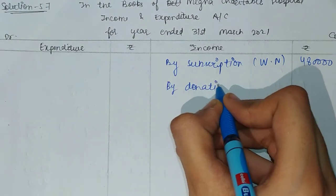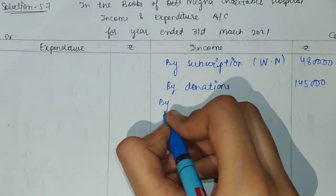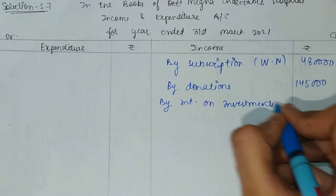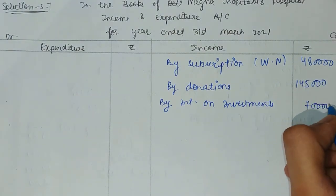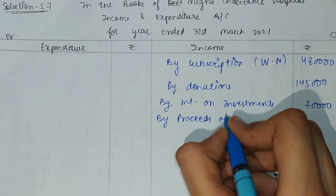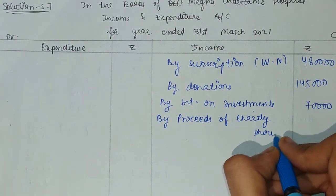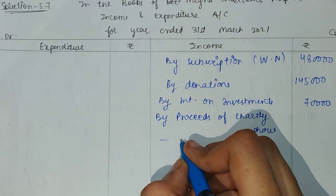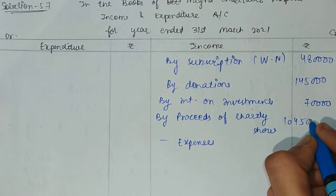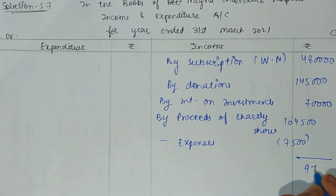After that, donations amount given is $145,000. And you will get interest from investments — that is $70,000. Then for charity show proceeds — as with the last time, we deduct the related expenses. So charity show proceeds less charity show expenses gives us the net profit from charity show. The amount comes out at $7,500, which is added to income side showing $97,000.